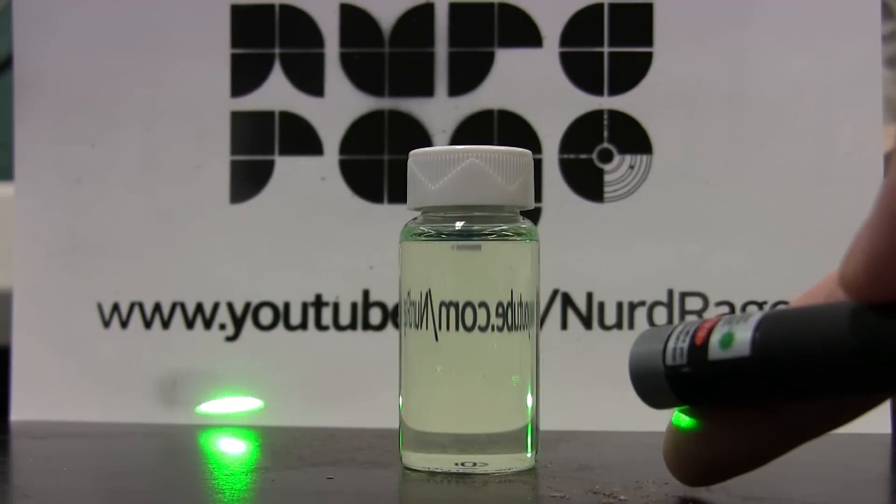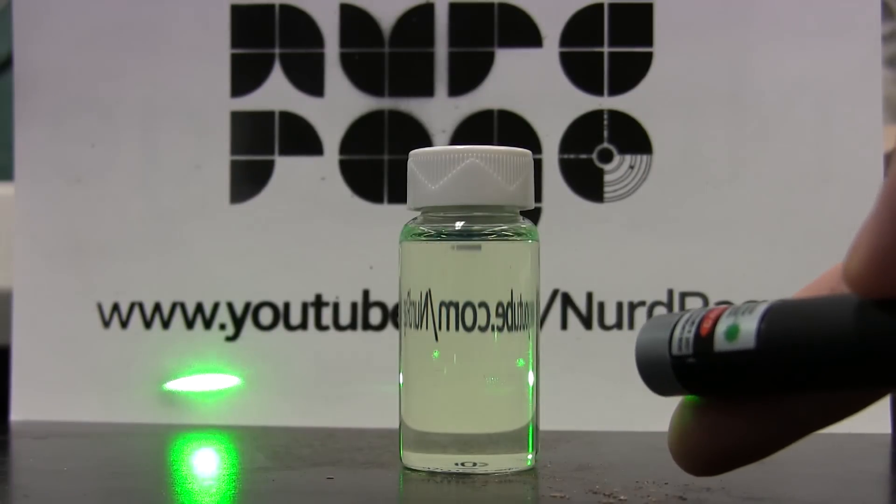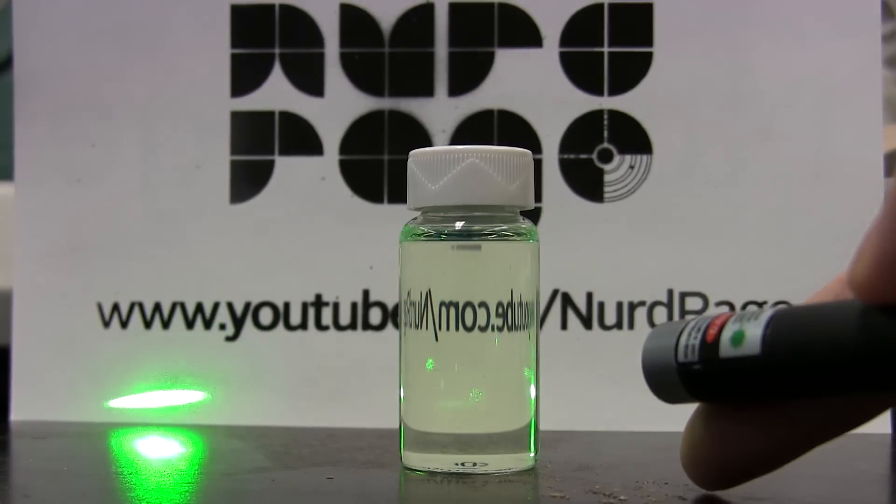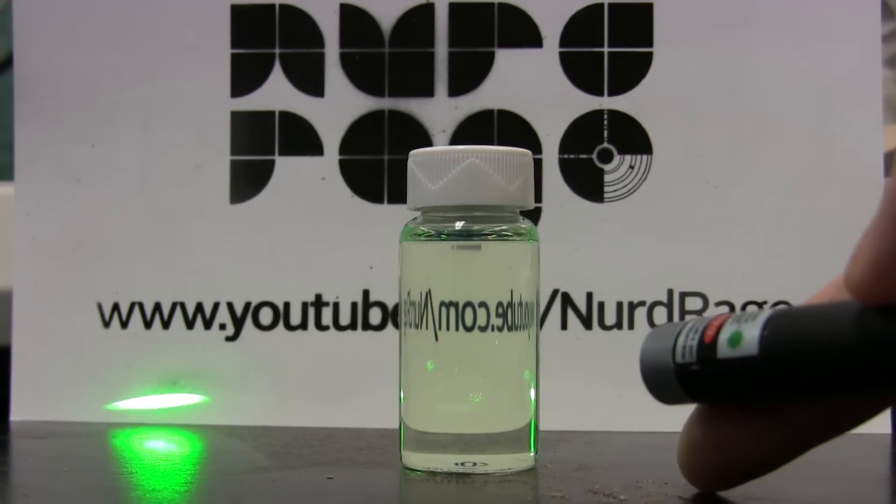Note that you don't get fluorescence if you use the same color of light as the fluorescent color. This is because you almost always lose a bit of energy and therefore it has to emit a different color or none at all.